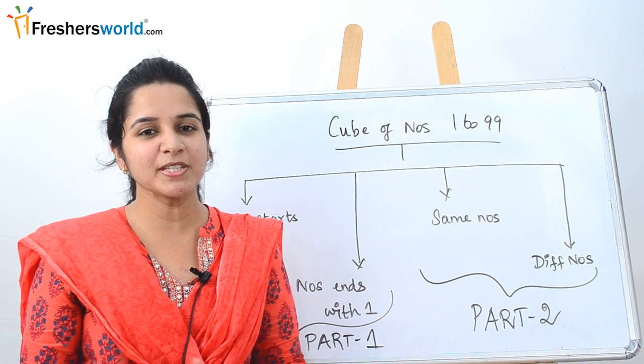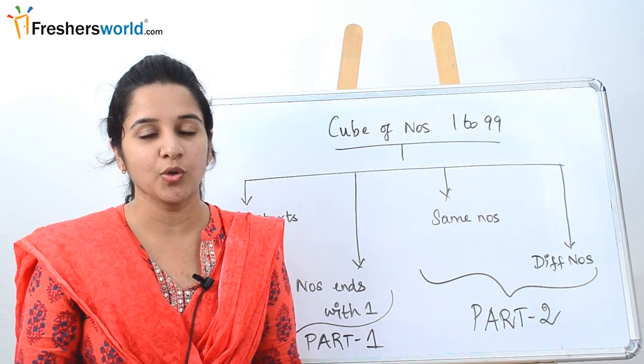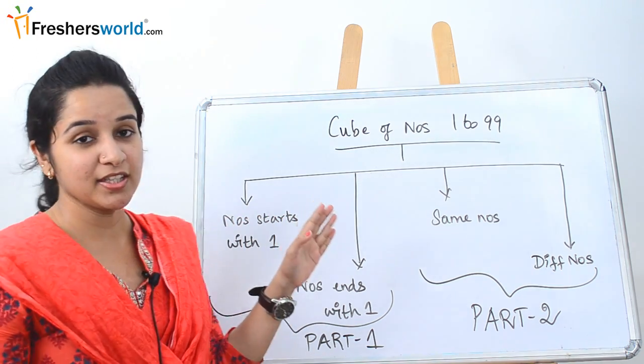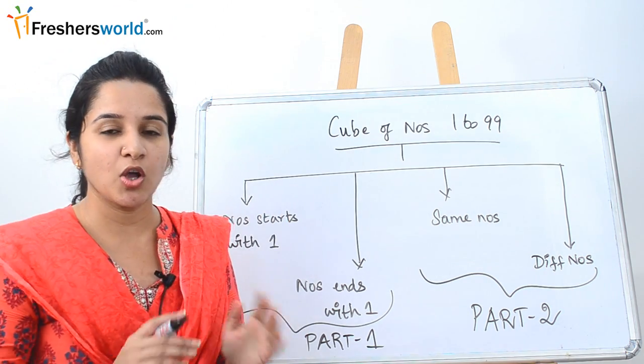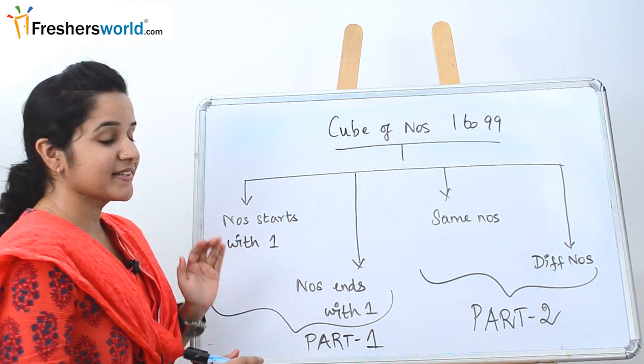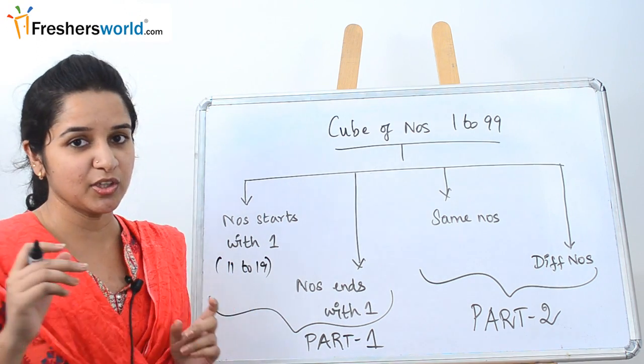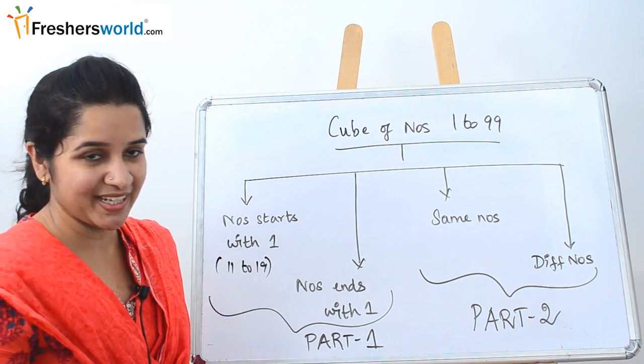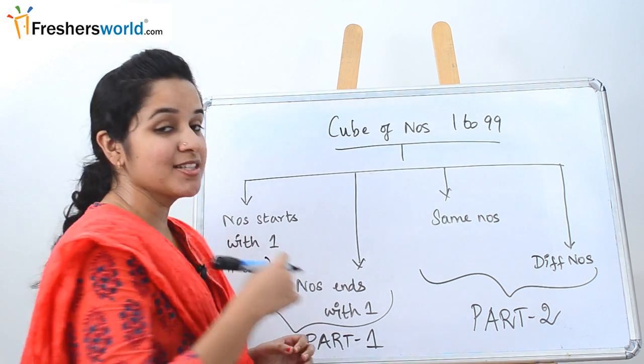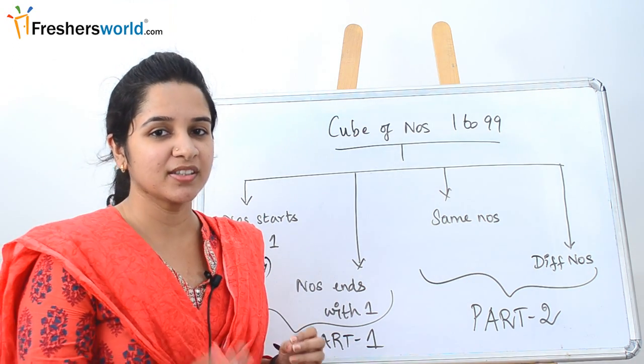This video will be split into part 1 and part 2 because we have 4 ways of solving cube numbers. They are split by numbers starting with 1, like numbers from 11 to 19, which are the numbers starting with 1 from 1 to 99.